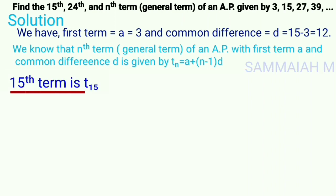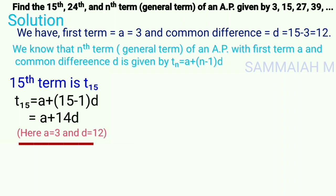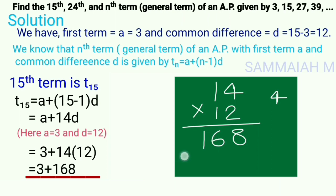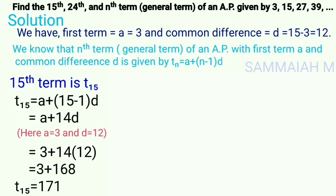The 15th term is t15 = a + (15 − 1) × d = a + 14d. Here a = 3 and d = 12, so substituting: 3 + 14 × 12 = 3 + 168 = 171. Therefore, t15 = 171, and the 15th term in the given AP is 171.